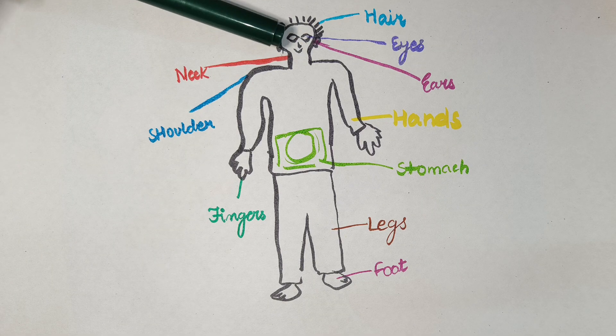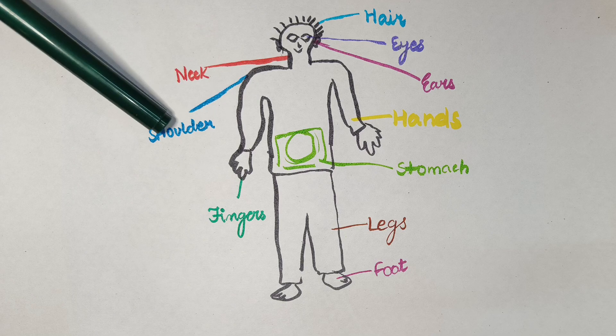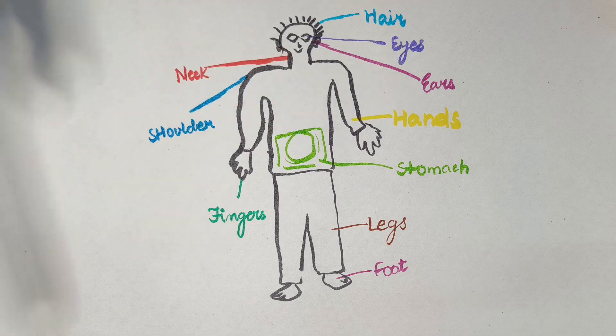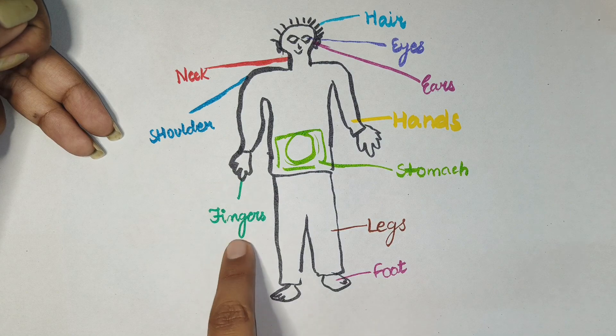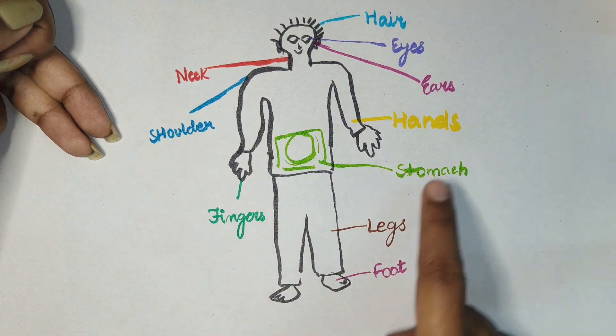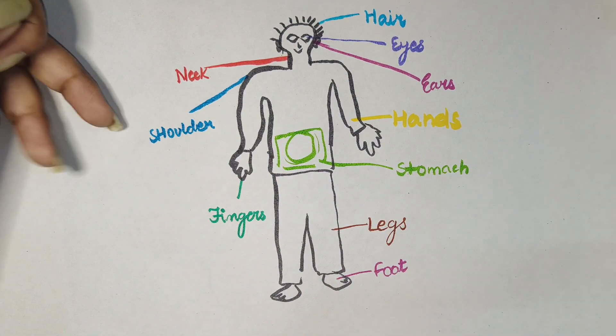As you can see these are hair, eyes, ear, neck, shoulder, hands, these are hands, fingers, stomach, legs and foot.